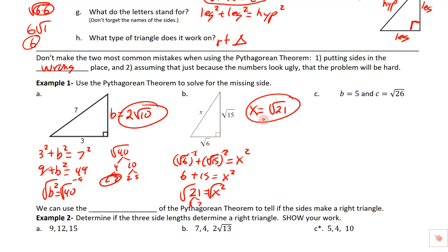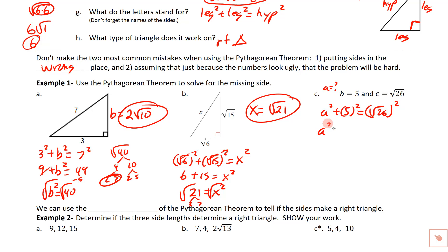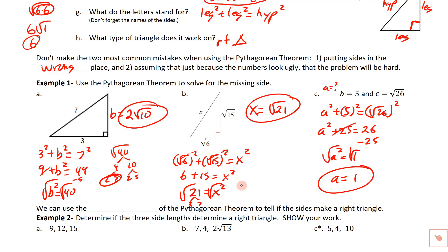On a problem without a diagram, remember that b and a represent legs and c is reserved for the hypotenuse. We're missing a. So a squared plus b squared equals c squared: a squared plus 5 squared equals square root of 26 squared. 5 squared is 25, and squaring the square root of 26 just gives 26. So a squared equals 26 minus 25, which is 1. Take the square root: a equals 1. So of the three problems, this is actually the nicest one.